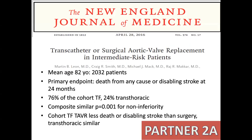For the intermediate-risk patients — this happened in 2016 — the mean age was 82 years old, with 2,000 patients included. The primary endpoint was death from any cause or disabling stroke at 24 months. 76% of the cohort was transfemoral and 24% were transthoracic. The composite was similar for non-inferiority. In the transfemoral TAVR cohort, there was less death or disabling stroke than surgery, while for the transthoracic group the results were similar.